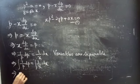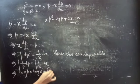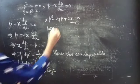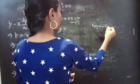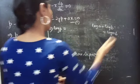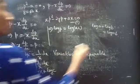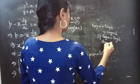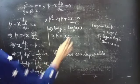Integrating both sides: integral of 1/p dp equals integral of 1/x dx, giving log p equals log x plus log c. Using the log property log a plus log b equals log ab, we get log p equals log xc. Since log a equals log b implies a equals b, we get p equals xc.